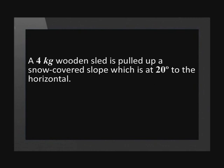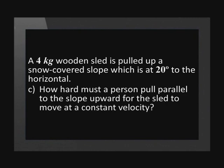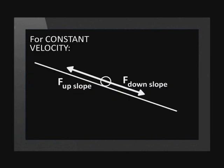The last question we'll look at is still part of the question about the sled. Now we are asked how hard a person must pull parallel to the slope upward for the sled to move at a constant velocity. For the sled to move at constant velocity, the force up the slope has to be equal in magnitude and opposite in direction to the forces down the slope.